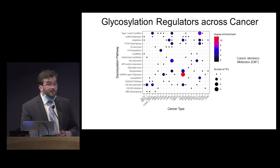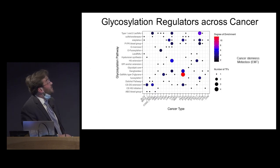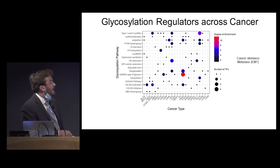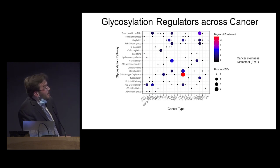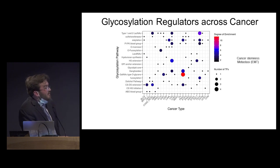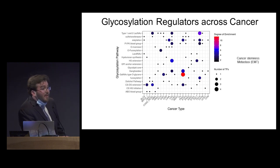Using these metrics, we can figure out which transcription factors are global regulators of glycosylation, as well as what types of communities of transcription factors are regulating different glycosylation pathways. Summaries of the results are shown in this grid, where we have a glycosylation pathway title on the y-axis and the different cancer types on the x-axis. The dots show that transcription factors were enriched, and the size of the dot represents the number of transcription factors, while the degree of red represents the statistical enrichment.